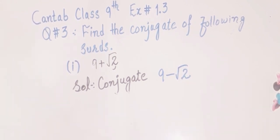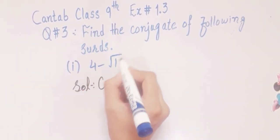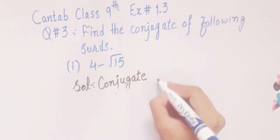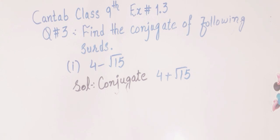Now in third part, 4 minus square root 15. Conjugate will be 4 plus square root 15. I hope you easily understand the concept of conjugate of the different square roots.